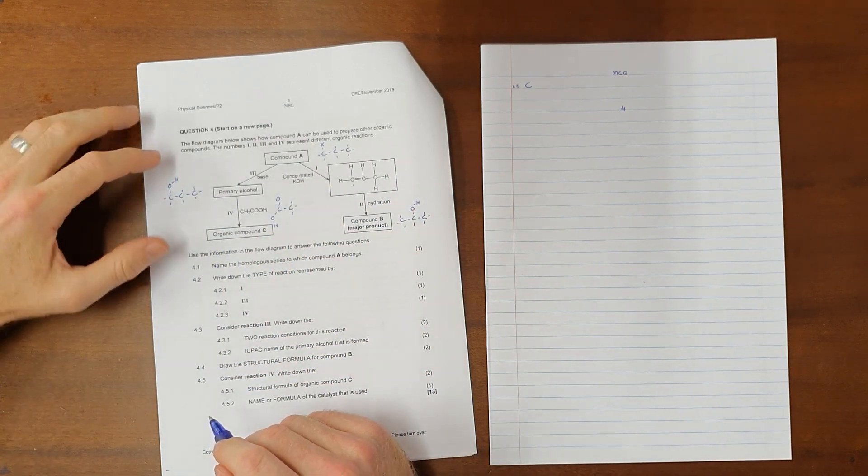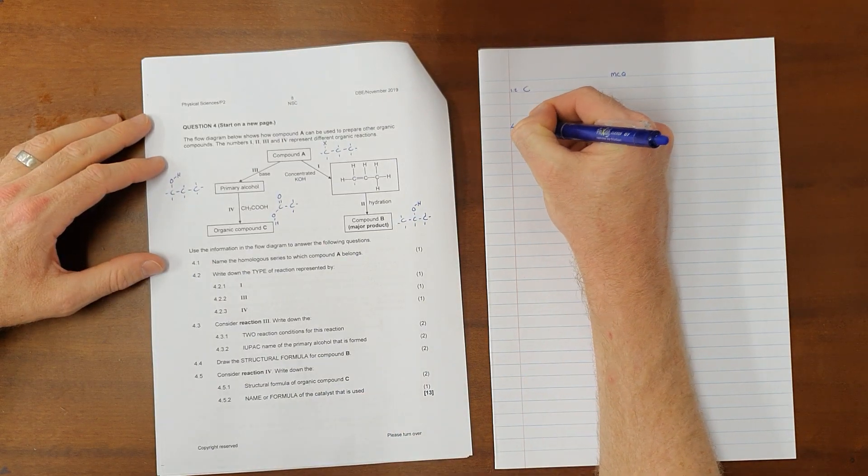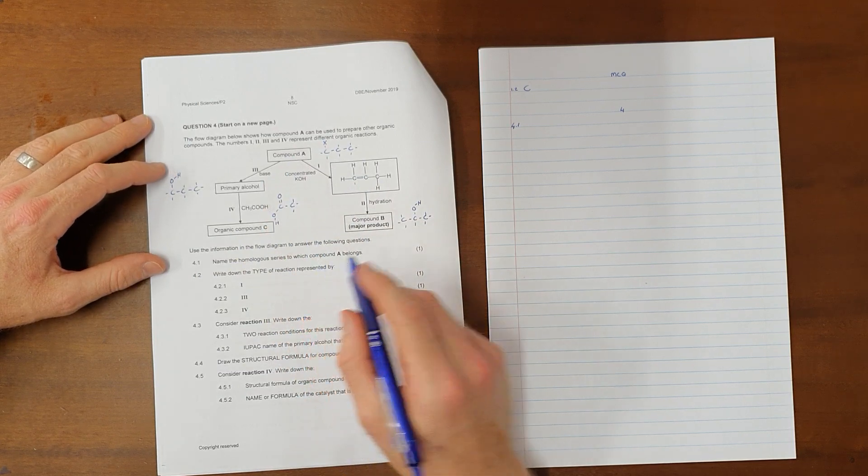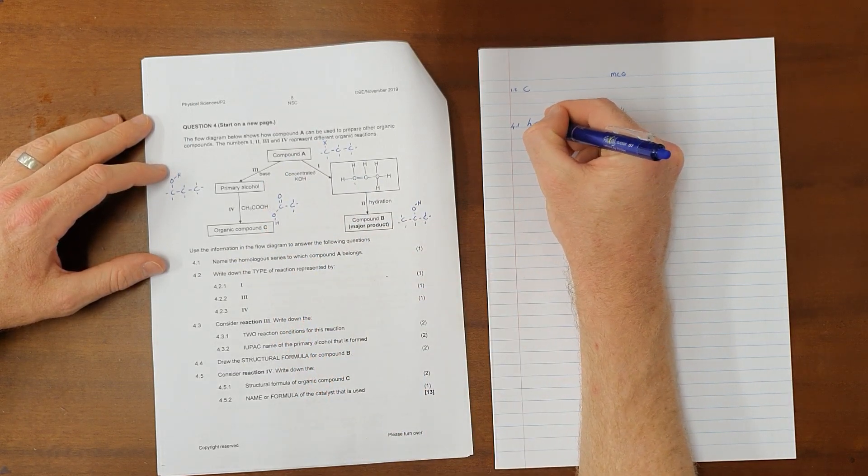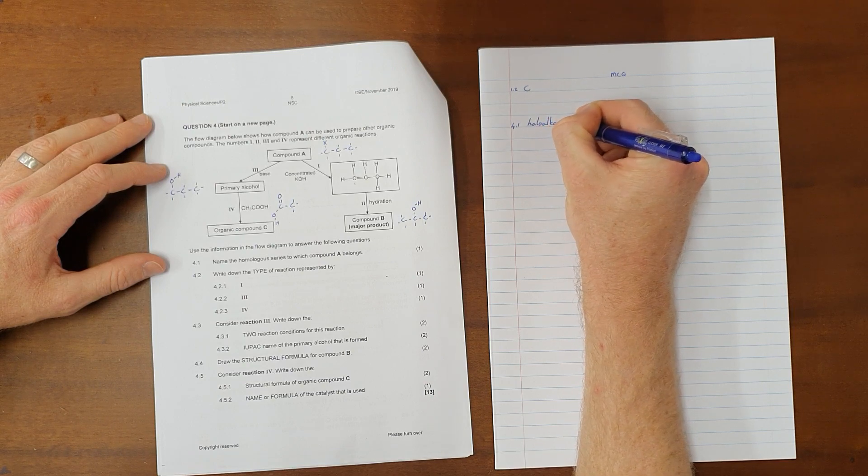4.1, name the homologous series to which compound A belongs. And as we have said here, compound A, in order for these reactions to be possible, must be a haloalkane. It is also acceptable to call this an alkyl halide.